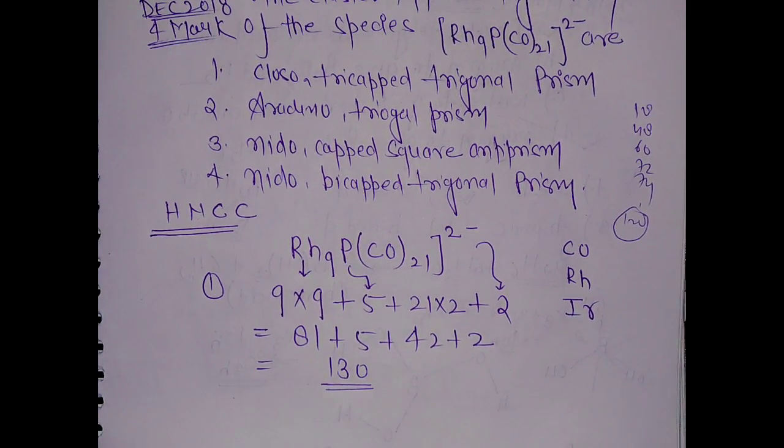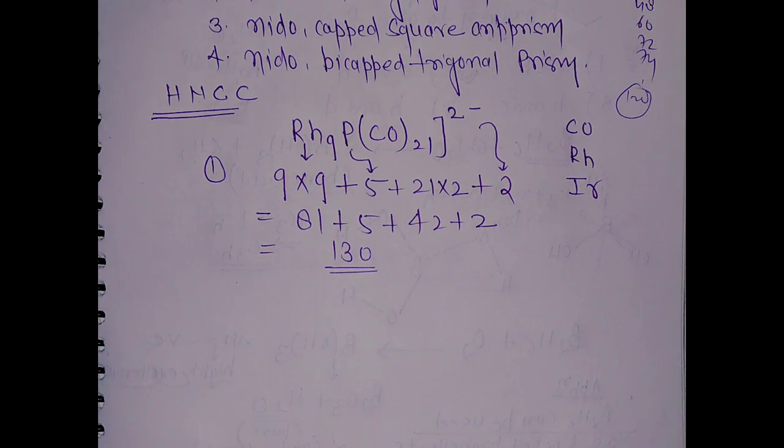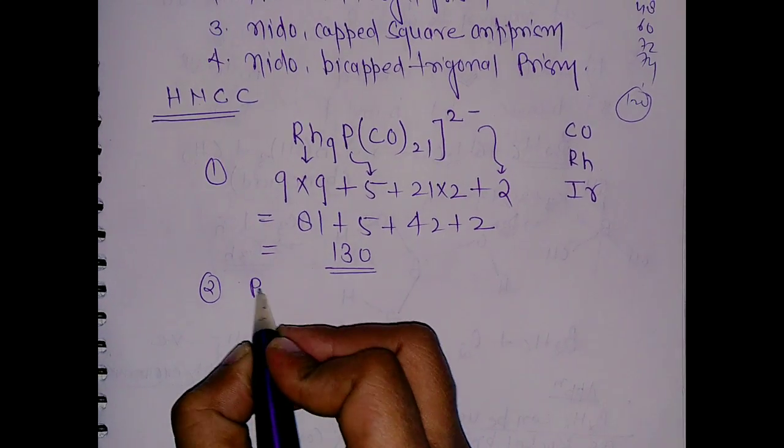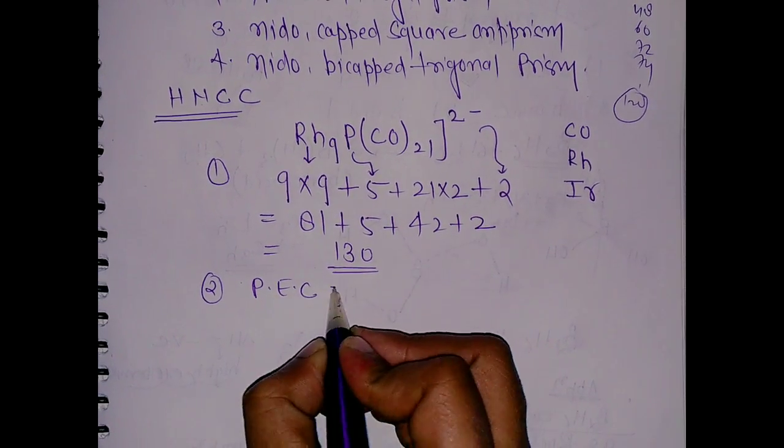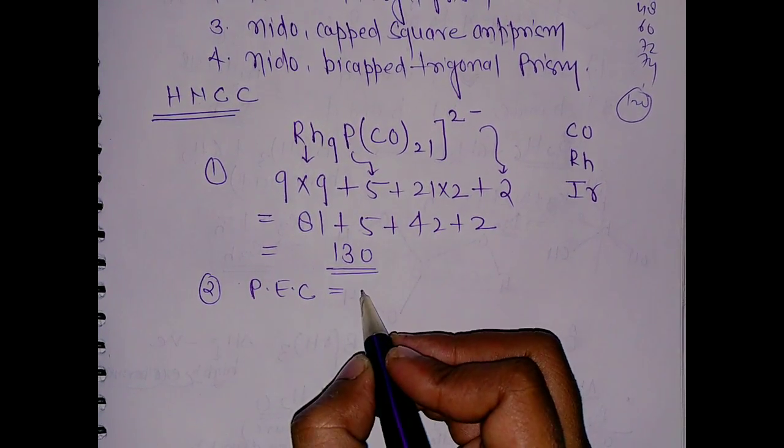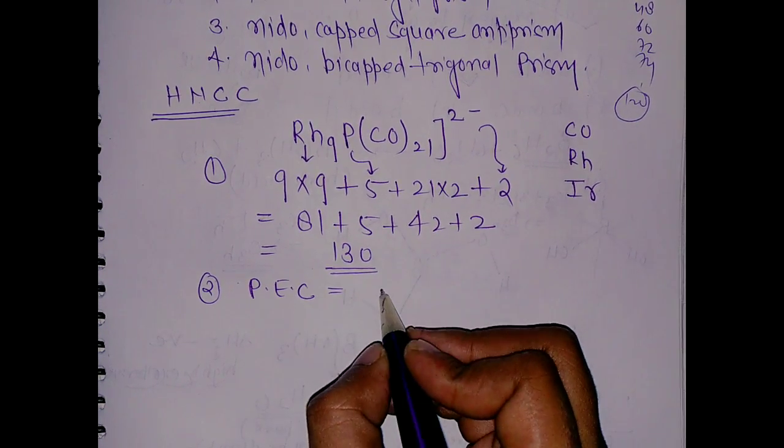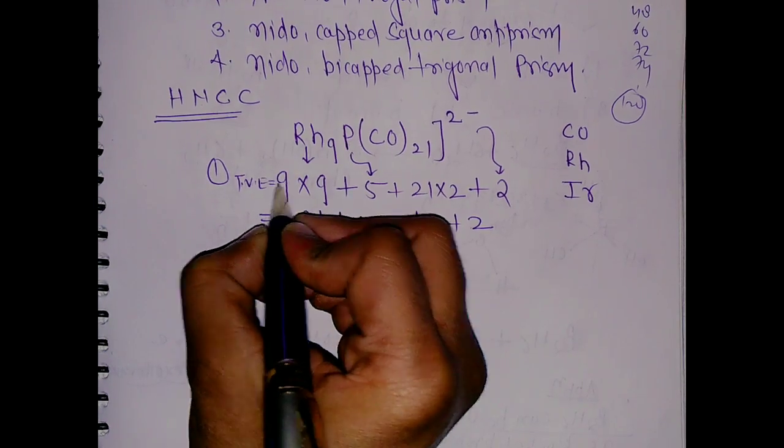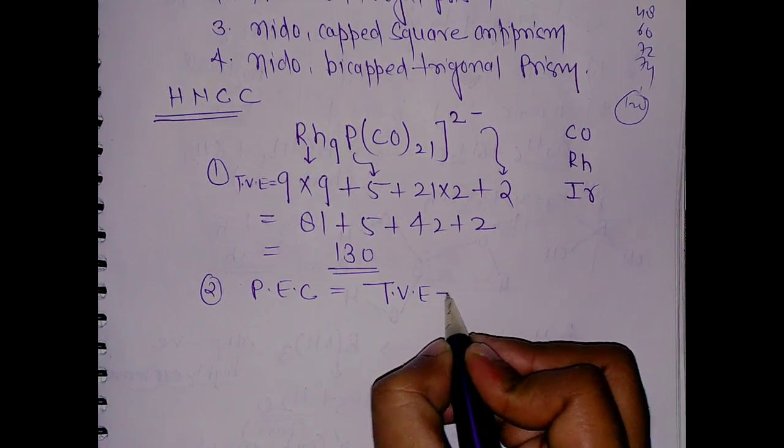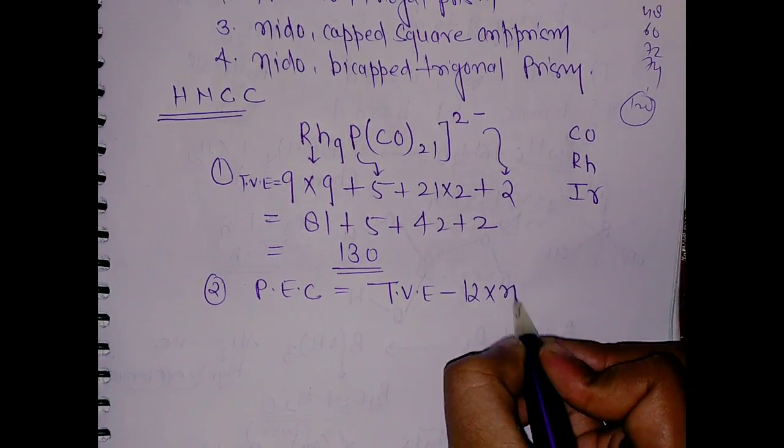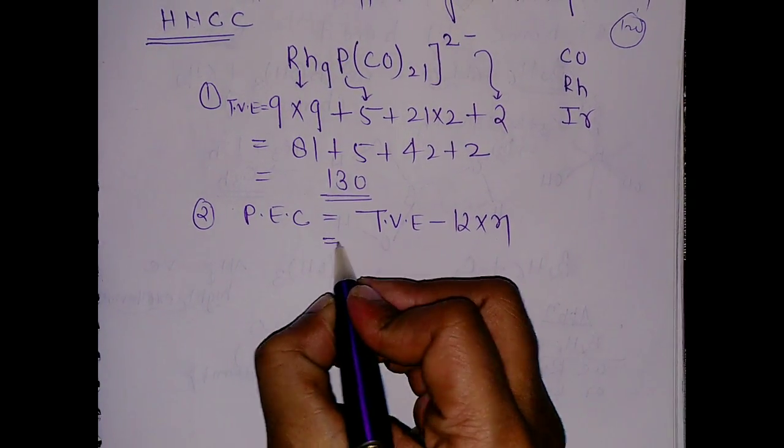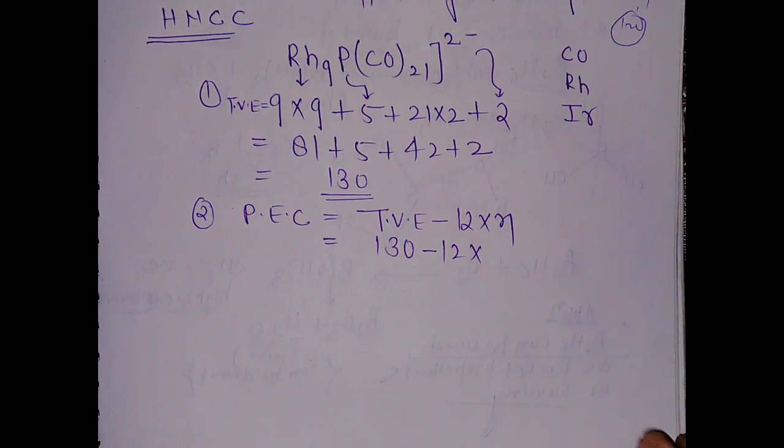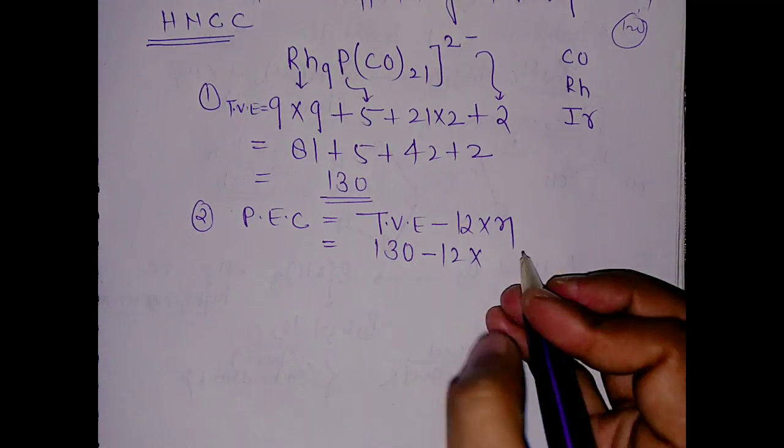In the second step, you have to calculate PEC, polyhedra electron count. What will be the polyhedra electron count? It will be total valence electron, which is TVE, minus 12 times number of metals.